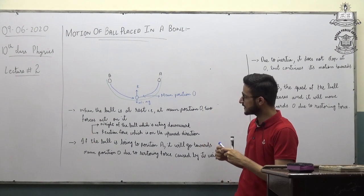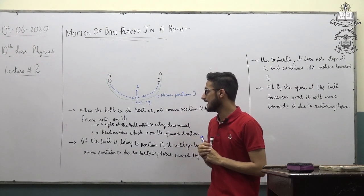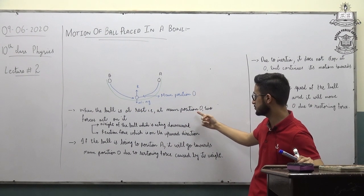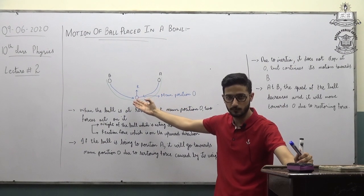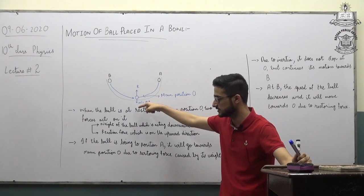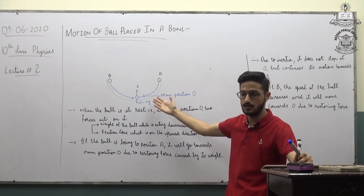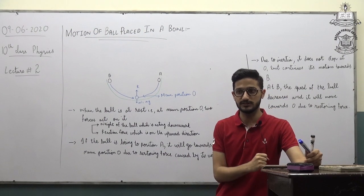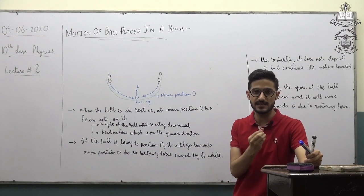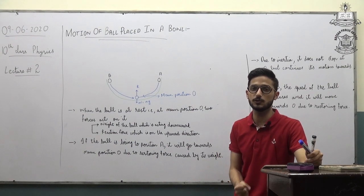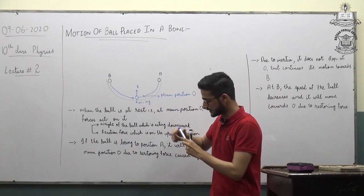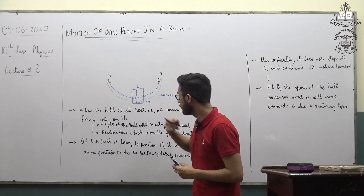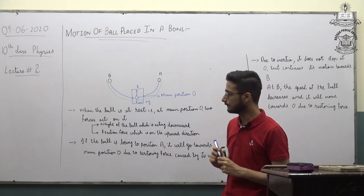Now let us start discussing. First, the ball is at rest — when the ball is at rest, that is at mean position O. This is our mean position. Why is it the mean position? Because at this position the body is at rest. The body is at rest when the net force is equal to zero.